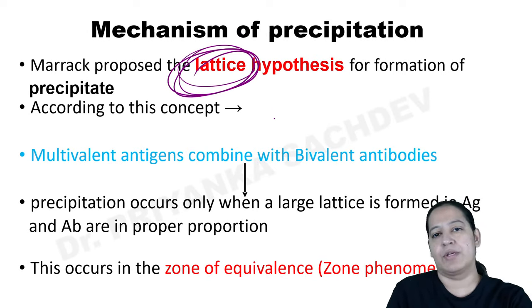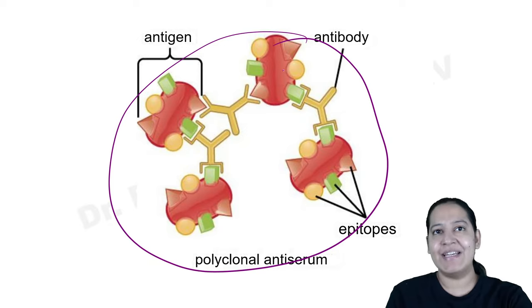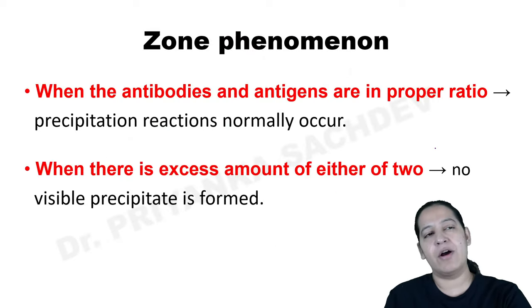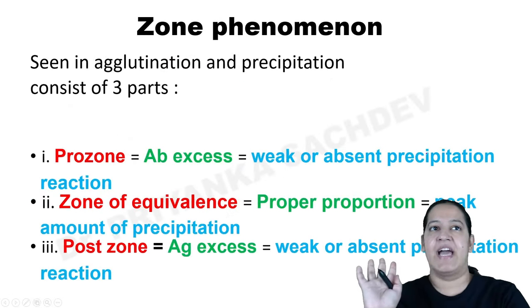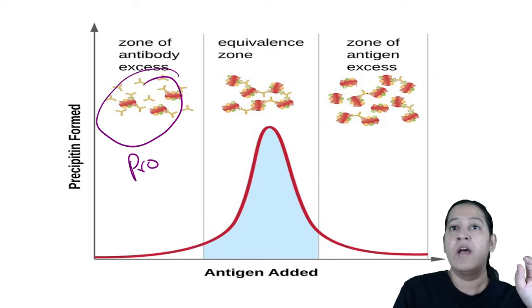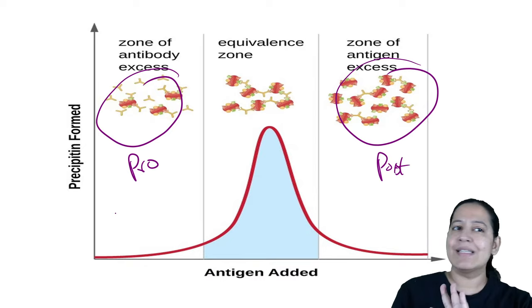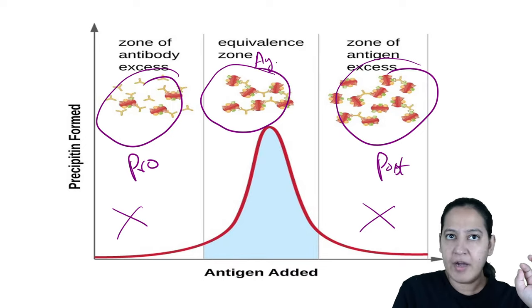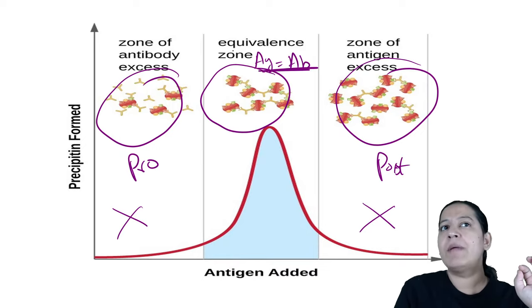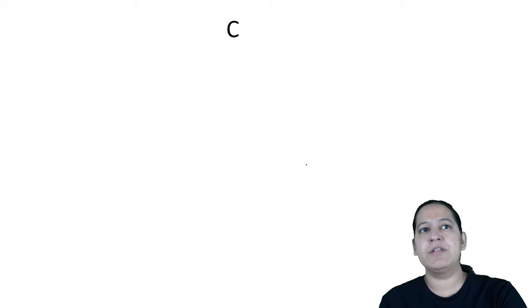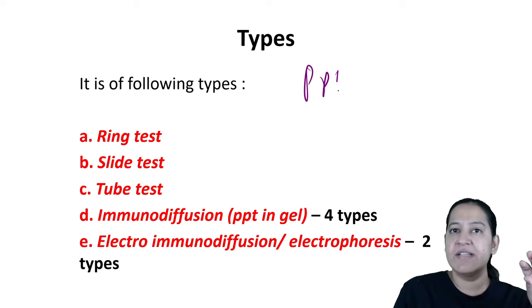We also discussed the lattice hypothesis: antigen is multivalent and antibody is bivalent. When they bind, a large web called a lattice forms, visible to the naked eye. We discussed zonal phenomenon: prozone is when antibody is in excess, post zone when antigen is in excess. Lattice forms only in the zone of equivalence where both are in proper proportion.